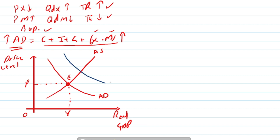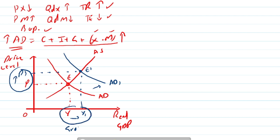Equilibrium is at point E where price level is P and real GDP is Y. If aggregate demand rises due to expansionary monetary policy, the aggregate demand curve shifts to the right and equilibrium moves to E1, where real GDP rises to Y1 and price level increases to P1. When price level increases due to higher aggregate demand, it is called demand-pull inflation. Real GDP increases causing economic growth, investment rises, and more employment opportunities are created. However, the inflation objective is deteriorated — inflation increases rather than decreasing.